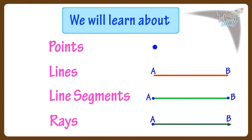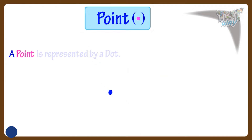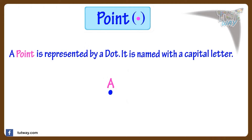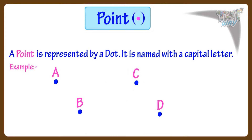Let's start with a point. A point is represented by a dot. It is named with a capital letter. For example, this is point A. Here are more examples of points — A, B, C, D are points.